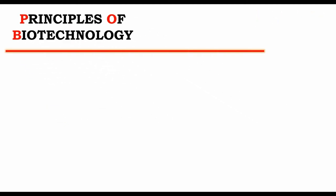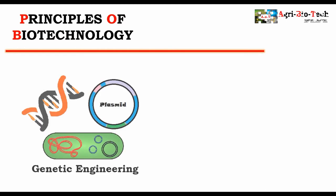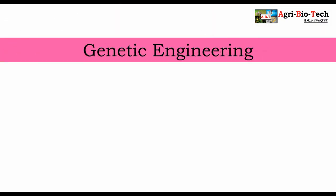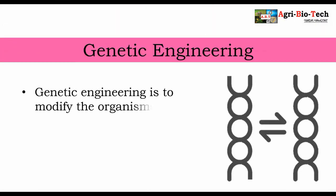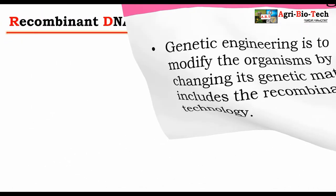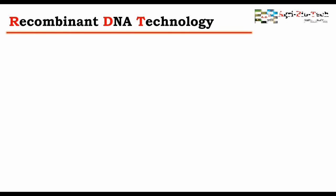Modern biotechnology started with two crucial technologies: genetic engineering and chemical engineering. The first one is genetic engineering. Genetic engineering is the modification of organisms by changing their genetic material. It includes recombinant DNA technology.